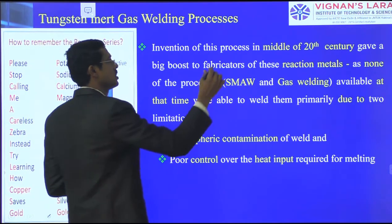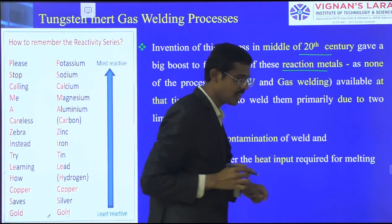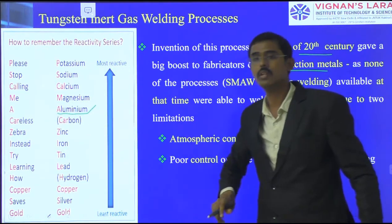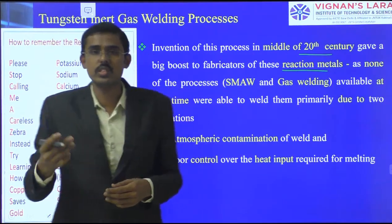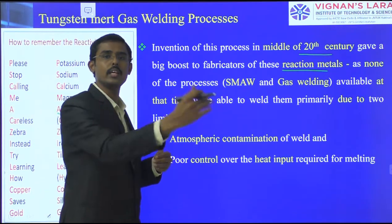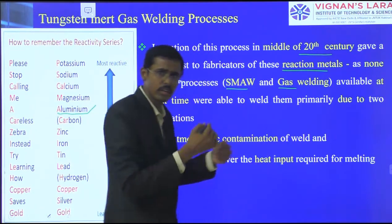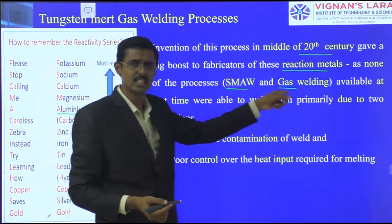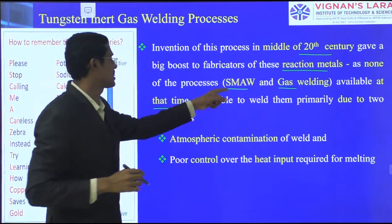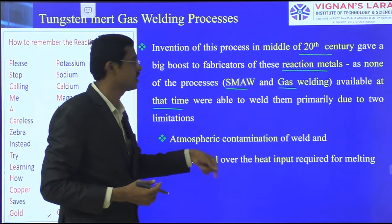The invention of the TIG process in the middle of the 20th century gave a big boost for the fabrication of reactive metals such as potassium, sodium, and aluminium. Aluminium is reactive to oxygen and the environment, so it must be protected. SMAW and gas welding processes such as CO2 welding and MIG welding, available at that time, could not stop the reaction of aluminium with the environment. Therefore, a new method like TIG welding was invented.